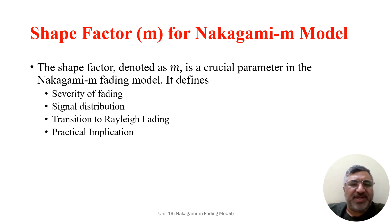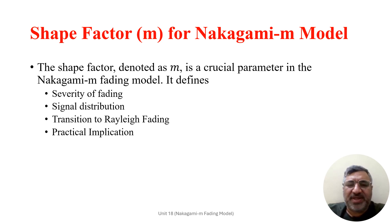Regarding the transition to Rayleigh fading: when M equals 1, the Nakagami fading model automatically reduces to the Rayleigh fading model. In the Rayleigh fading model, M equal to 1 represents the scenario with no dominant line-of-sight component, where fading is solely due to multipath scattering from obstacles toward the receiver antenna. As M deviates from 1 in the Nakagami-M model, it introduces varying degrees of fading severity, allowing for a more flexible representation of fading conditions.